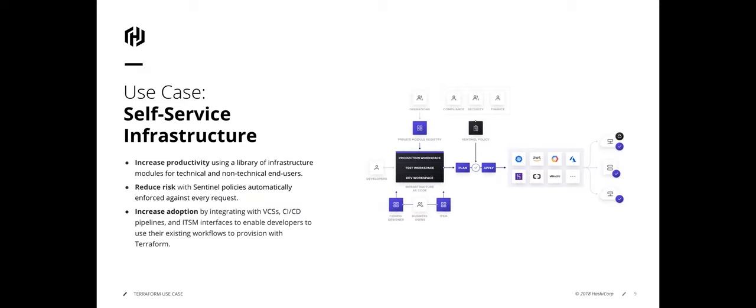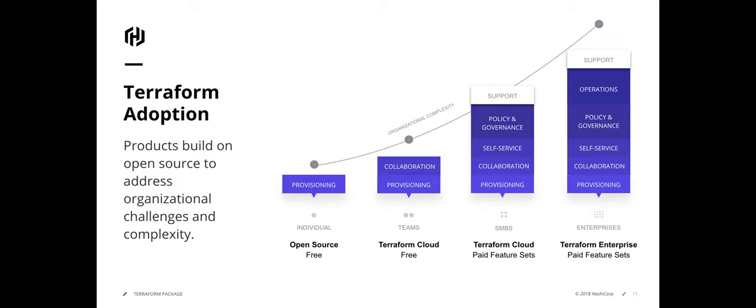We also have a product called Sentinel that helps create policy as code, verifying that your business-level policies are being met along with your infrastructure plans. In terms of versions: a very capable open-source version lets you download Terraform locally and start provisioning cloud infrastructure right now. Terraform Cloud enables more advanced workflows — workspaces, consolidated variable sets, and Vault-backed security. Both are free. As organizations scale up, we move into the Terraform Cloud business tier and self-hosted enterprise versions.